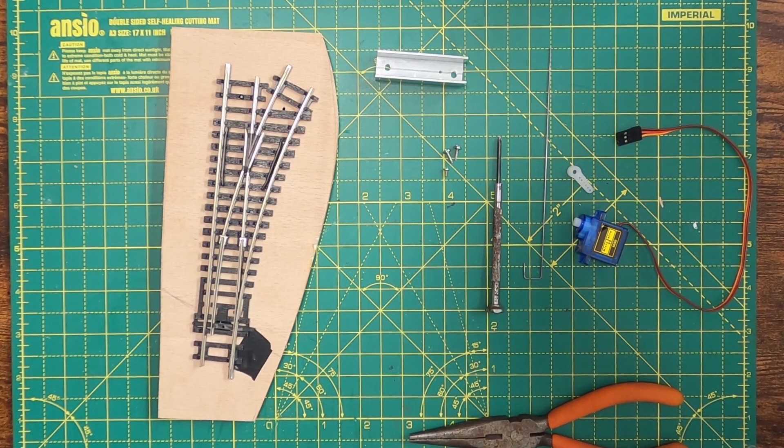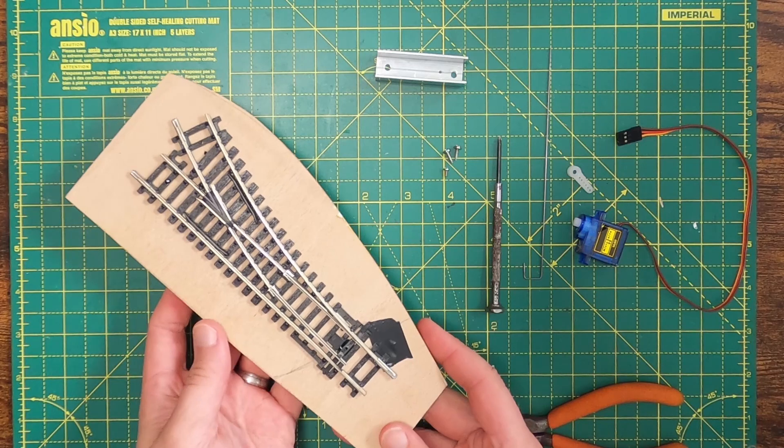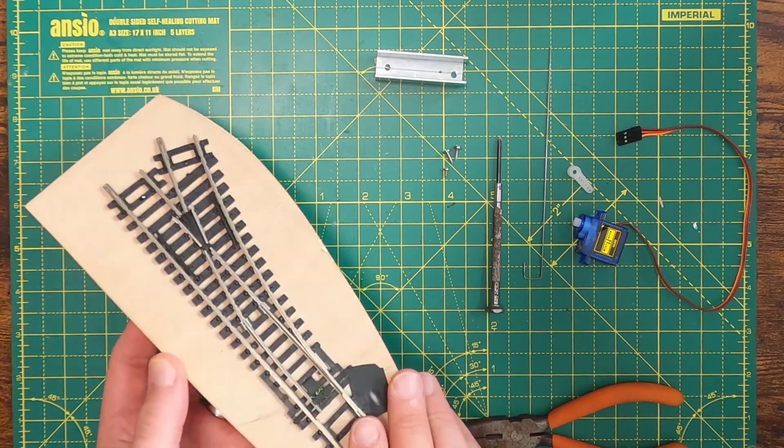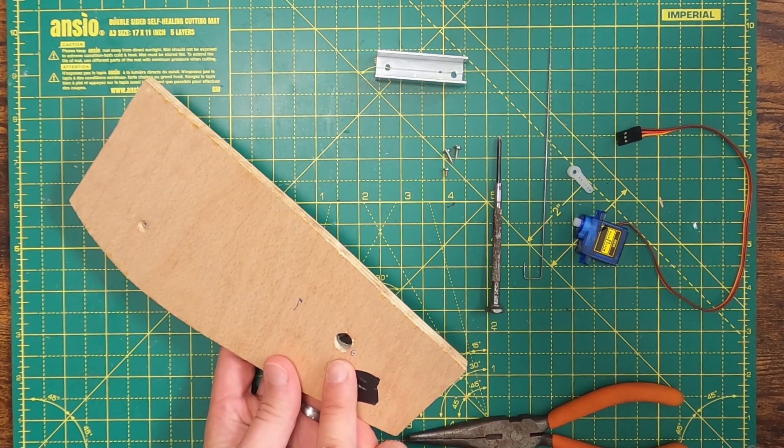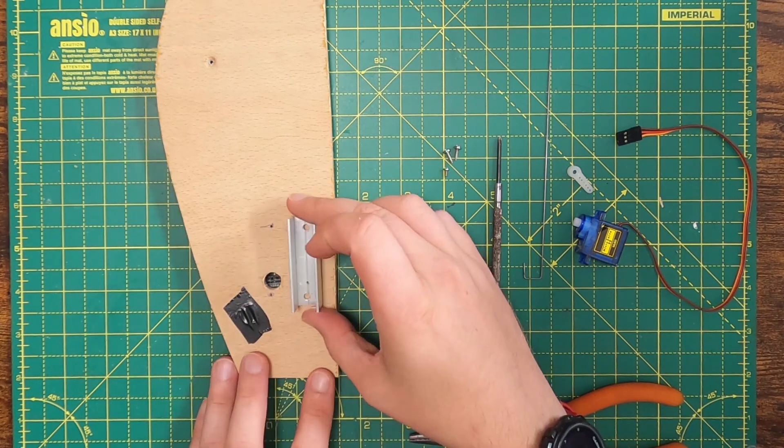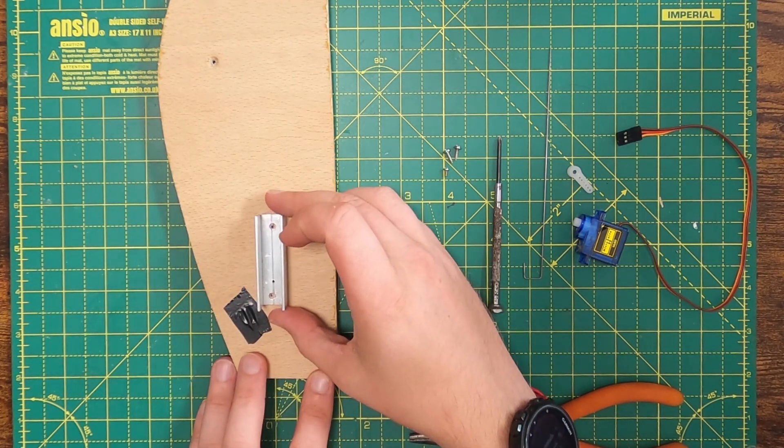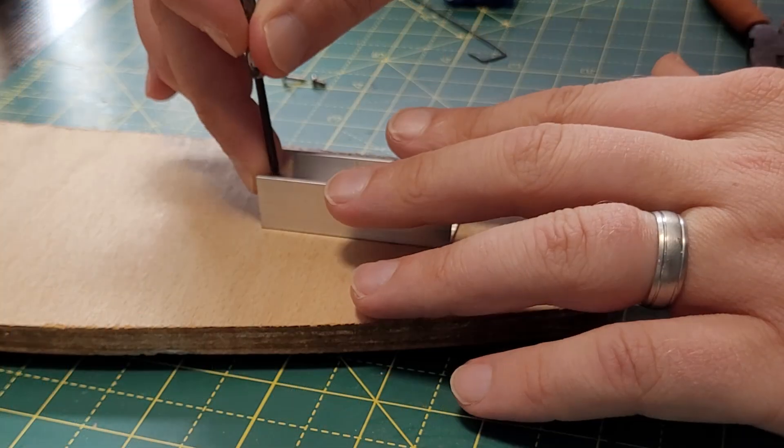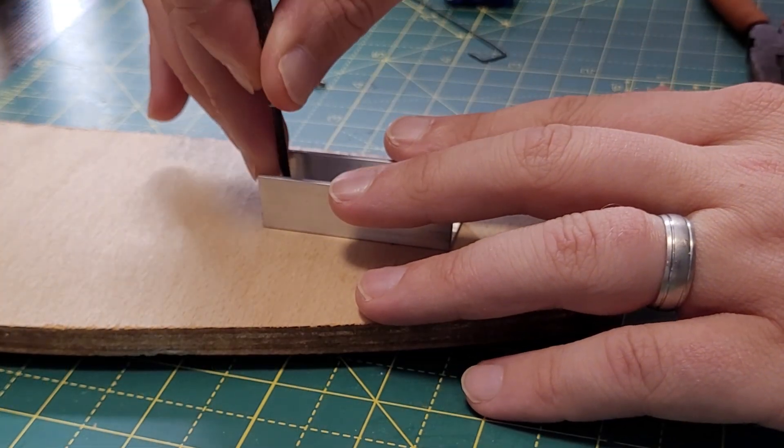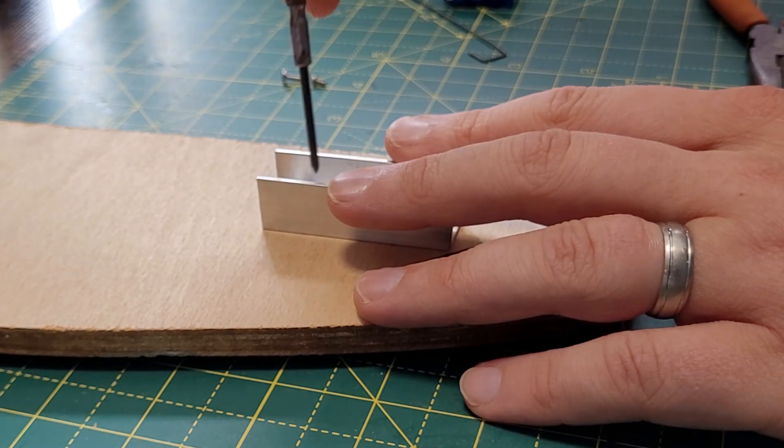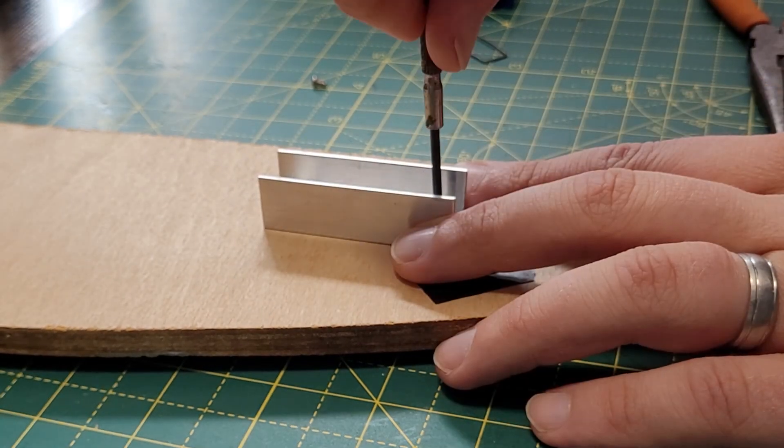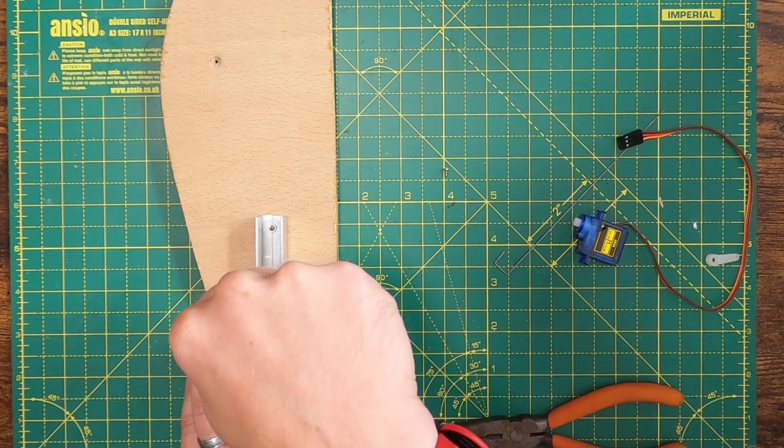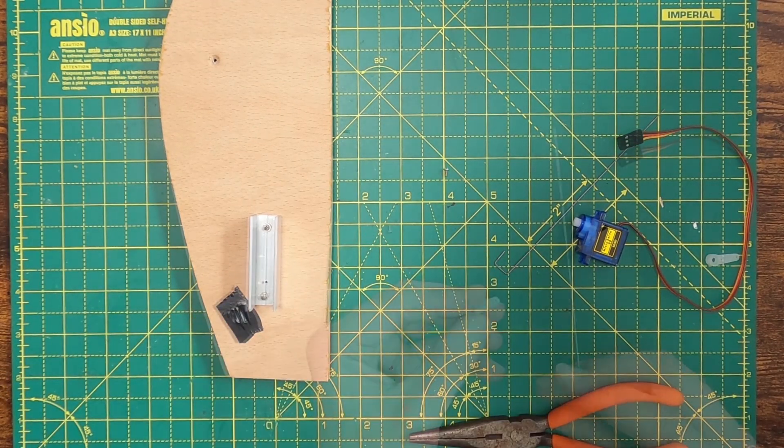For this demo I'm just using a scrap bit of plywood as the baseboard and I've pinned this point onto it. Directly under the center of the tie bar I've drilled a 10 millimeter hole. We're going to position the mount so that the smaller 1.5 millimeter hole is directly below the center of the tie bar and secure it in place using the two larger screws that came with the servo. I've already marked out the screw holes and drilled a couple of pilot holes to save time. So that's the mount in place.